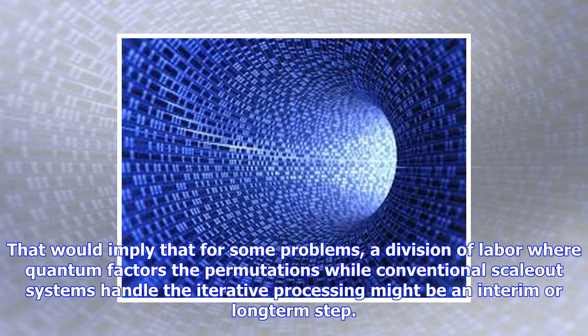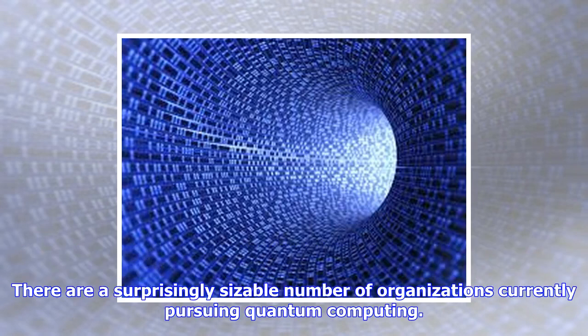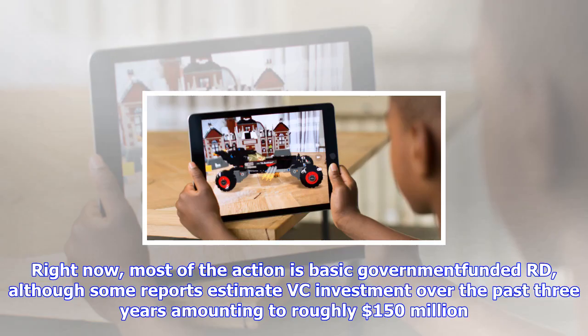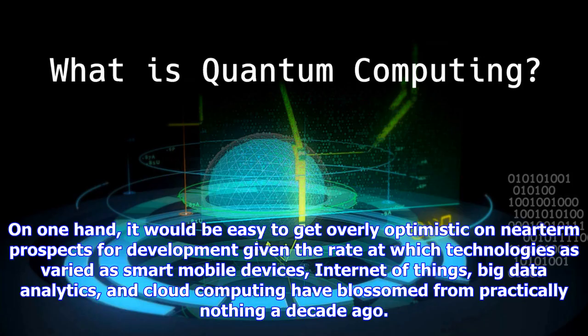The bottleneck is memory. Such computations would require storing of state or interim results, much like a Spark or MapReduce problem. The problem is that, while development of compute chips is underway, nobody yet knows what true quantum memory would look like. That would imply that for some problems, a division of labor where quantum factors the permutations while conventional scale-out systems handle the iterative processing might be an interim or long-term step.